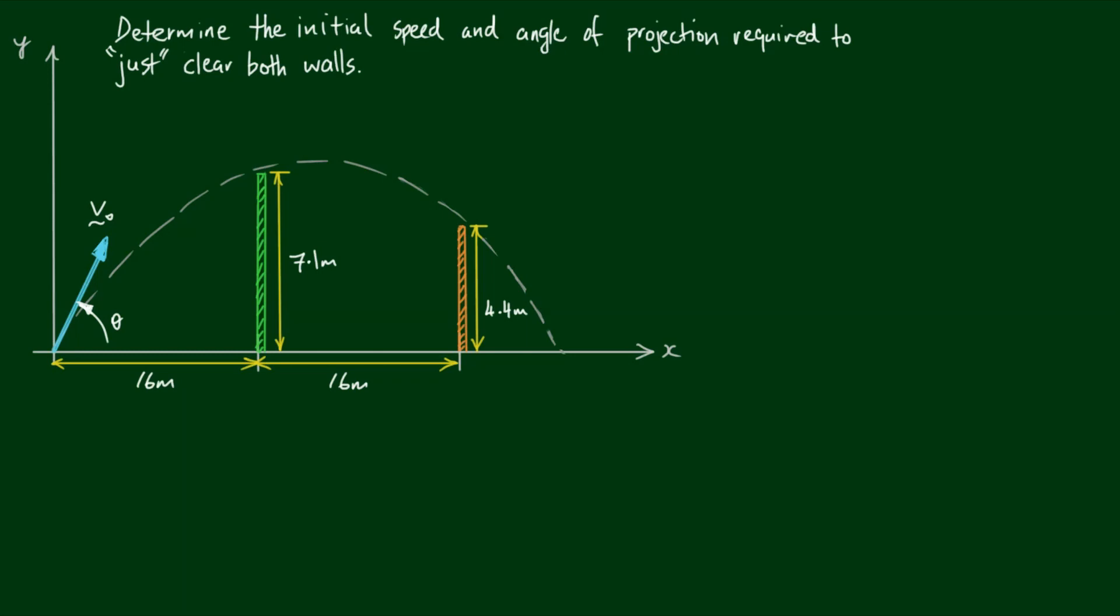Let's work through our second projectile motion example. Here we've got two walls. One is 7.1 metres tall, the other is 4.4 metres tall, 16 metres apart.